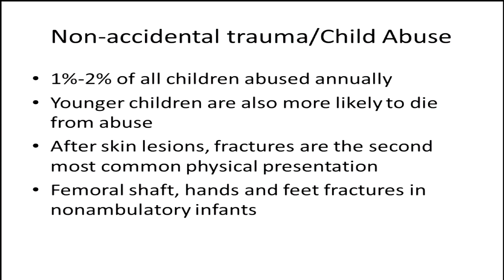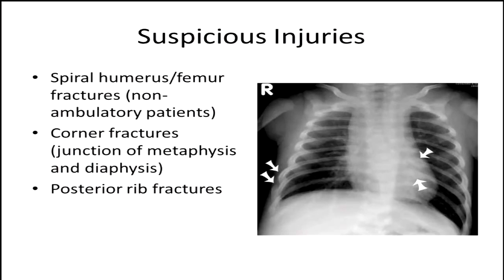This is something all of us, even in the adult world, need to be very cognizant about — we have to be these children's advocates. One to two percent of all children are abused annually. Younger children are more at risk, and after skin lesions, fractures are the most common physical manifestation of child abuse — especially femoral shaft fractures, hand and foot fractures, and fractures in nonambulatory babies. Spiral fractures of the femur in nonambulatory patients are considered high risk. Corner fractures and injuries at the metaphyseal-diaphyseal junction of the tibia or distal femur, and posterior rib fractures in different stages of healing, are sometimes considered pathognomonic.